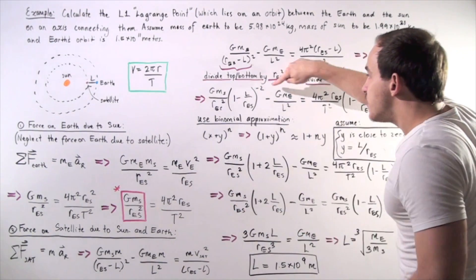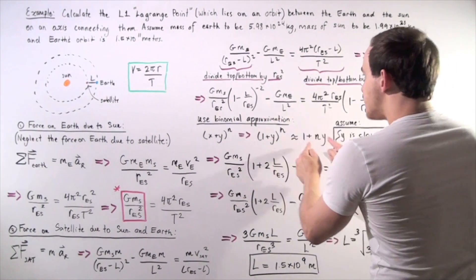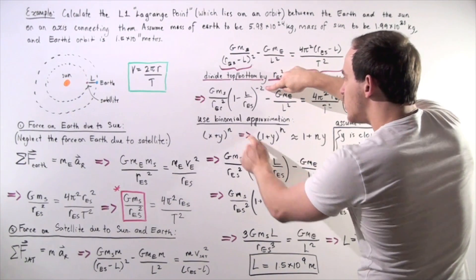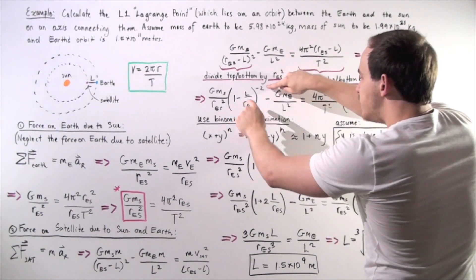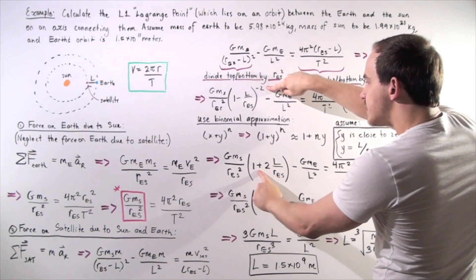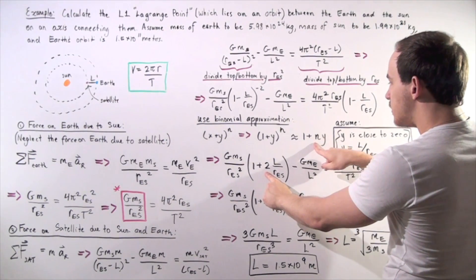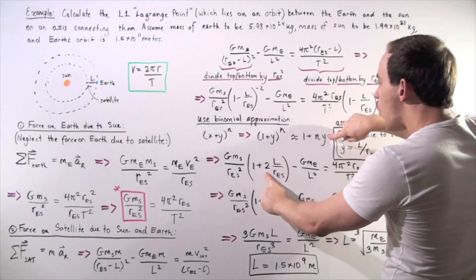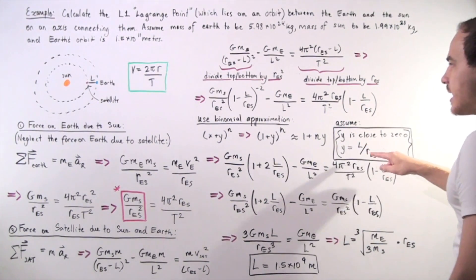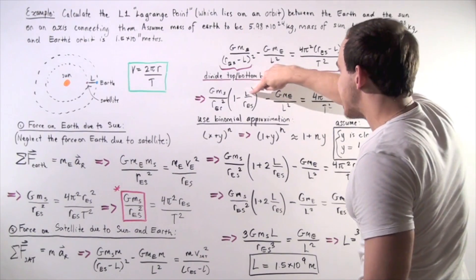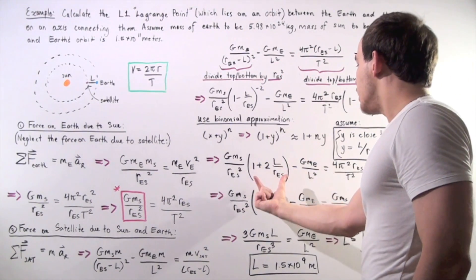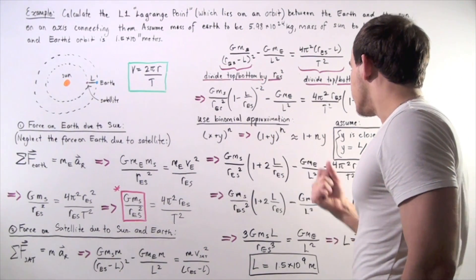This simplifies as follows: the negative 2 exponent combined with the negative sign — negative times negative becomes positive. We have n equal to 2, and y becomes L divided by R_ES. We get the following result.